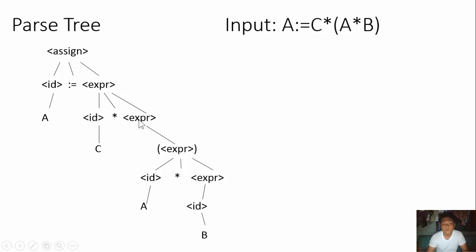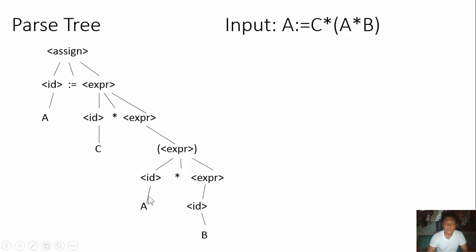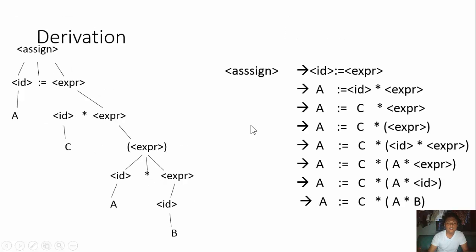ID is equal to C, then expression is another open and close expression. On the open and close are ID times expression. On the next part, ID is equal to A, then expression is equal to ID, and ID is equal to B.